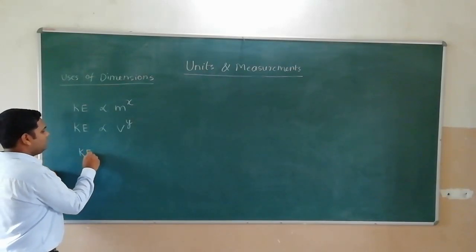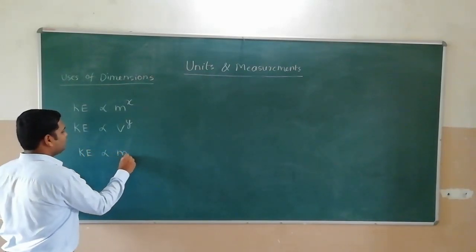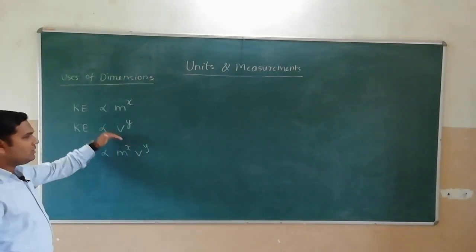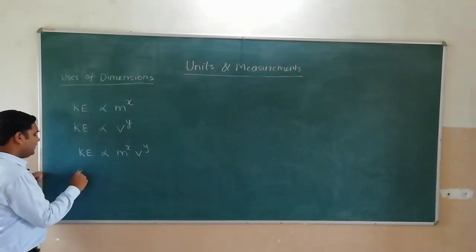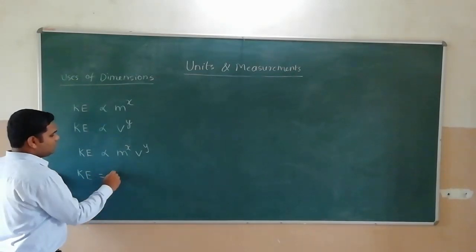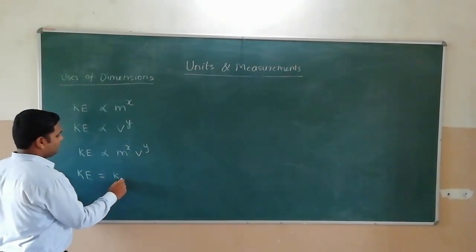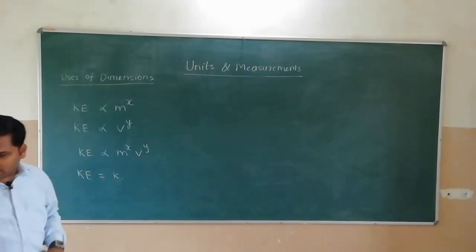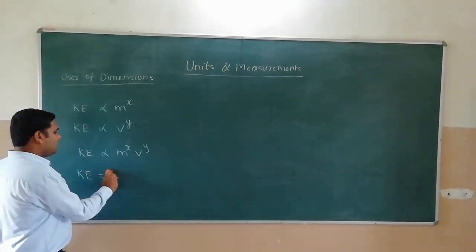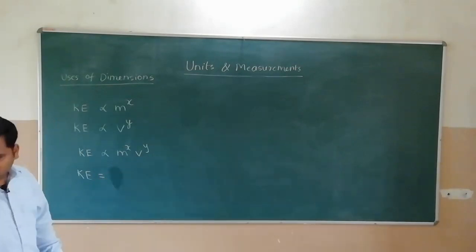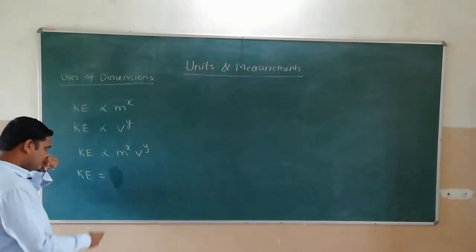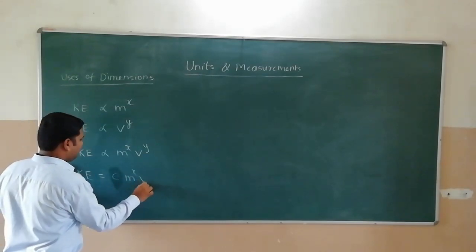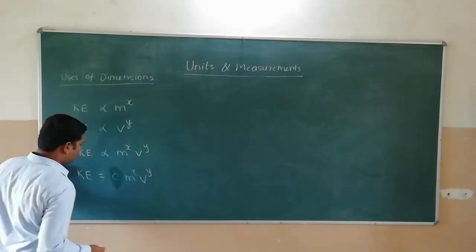So, kinetic energy depends on M raise to x. Aur isko, V raise to y. Dono ko combine kar diya. Toh I will write equation. Kinetic energy K is equal to some constant K. Into, yeh ha pe already symbols match ho raha. Toh constant ke liye we use some different symbol. Let's say constant is C into M raise to x V raise to y.